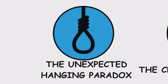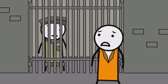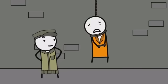The unexpected hanging paradox. A prisoner is told he will be hanged next week, but it must be a surprise. He tries to reason it out. If it hasn't happened by the last day, it wouldn't be a surprise. So, it can't be that day. Using the same logic backward, he eliminates every possible day. Yet, when the execution happens, he is still surprised.